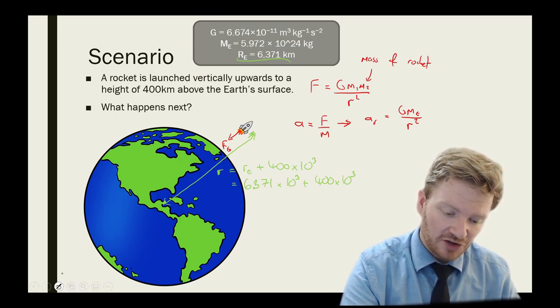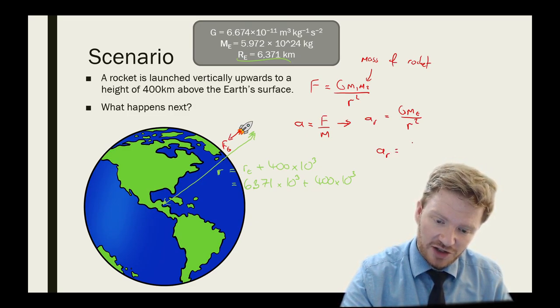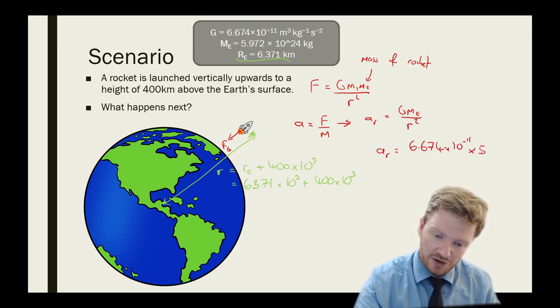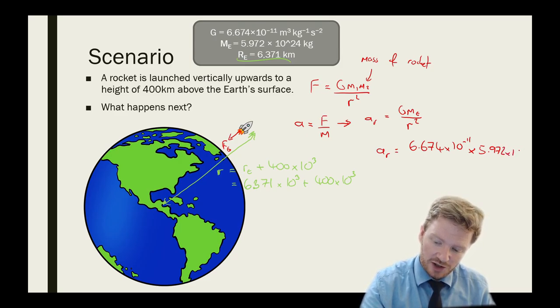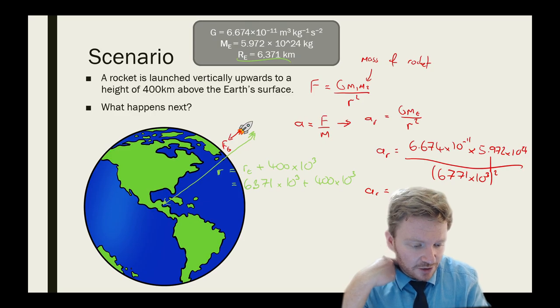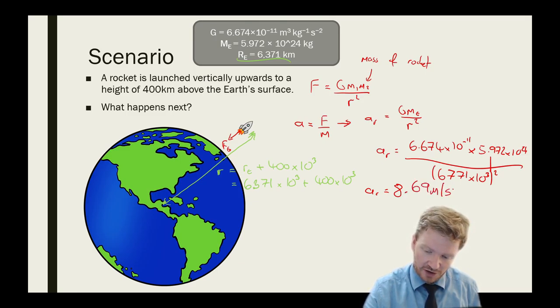So I'll go ahead and find my acceleration. I'll just plug those numbers in. And I can say the acceleration of my rocket is equal to 6.674 × 10⁻¹¹ multiplied by the mass of the Earth, which is 5.972 × 10²⁴, all divided by, and remember, don't forget the squared, 6771 × 10³, all squared. And if I just plug that into a calculator, that comes to 8.69 metres per second squared.